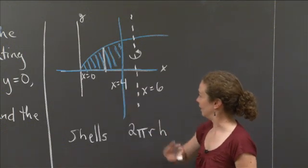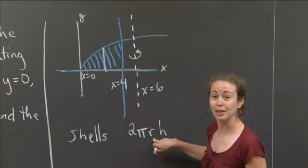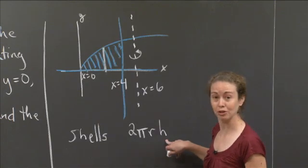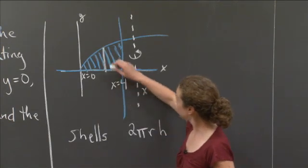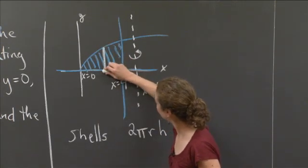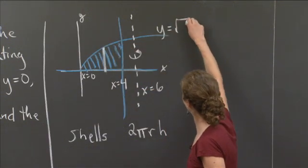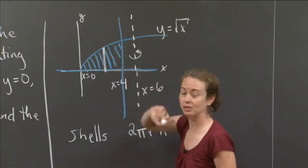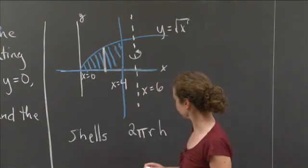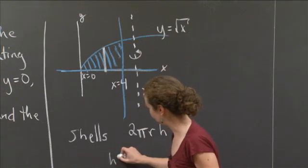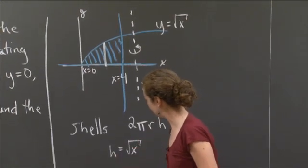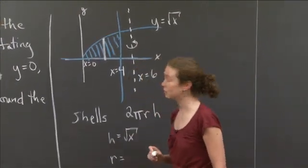So let's keep that in mind. r I should write as a function of x and h I should write as a function of x. If I examine this segment again here, the height is fairly simple. What is this curve? This is the curve y=√x. So the height is just √x. h equals √x.